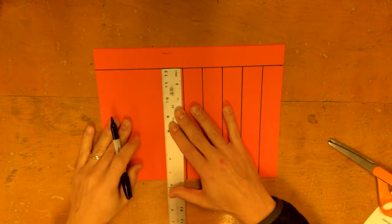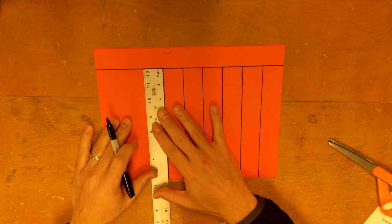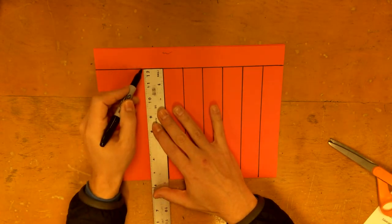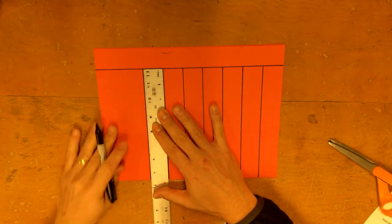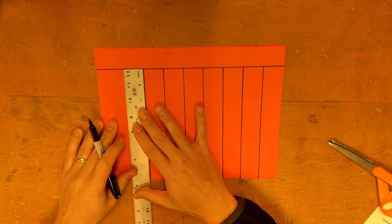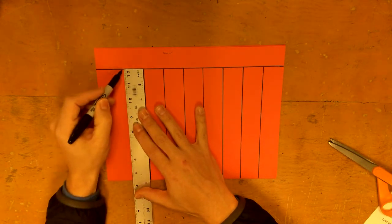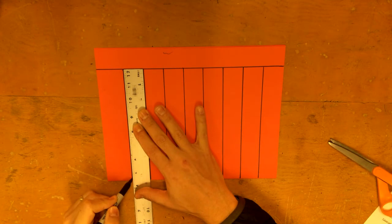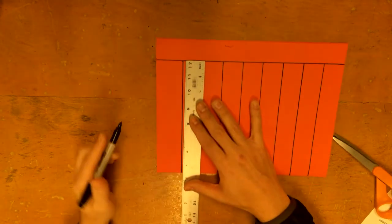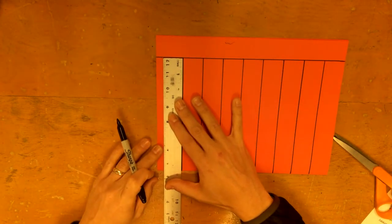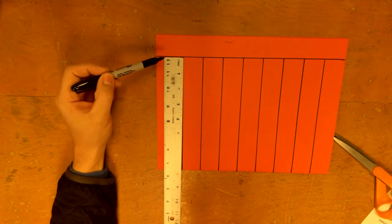You always got to check the top and the bottom. Are you matched up at the top? Are you matched up at the bottom? If you are, then make the line. If you're not, a lot of times people make crooked lines because they only check the top but they don't check the bottom.